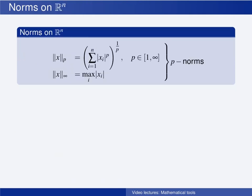For the set of all n-dimensional vectors with real valued components, we have several alternative ways to measure the length of the vectors. These are called the 1-norm, the 2-norm, etc., up to the infinity norm. In general, the p-norm for any value of p from 1 up to infinity is found by taking the absolute value of each of the elements xi, raising it to the power p, summing all these, and then taking the pth root of this sum.